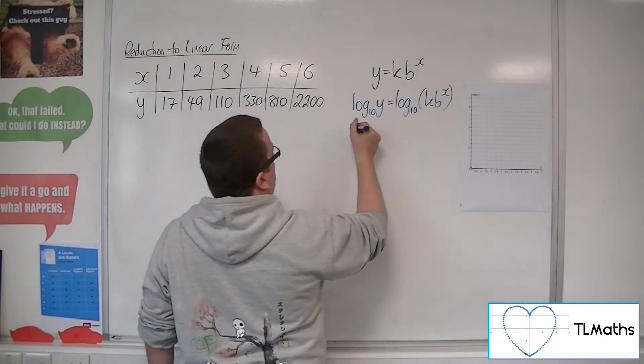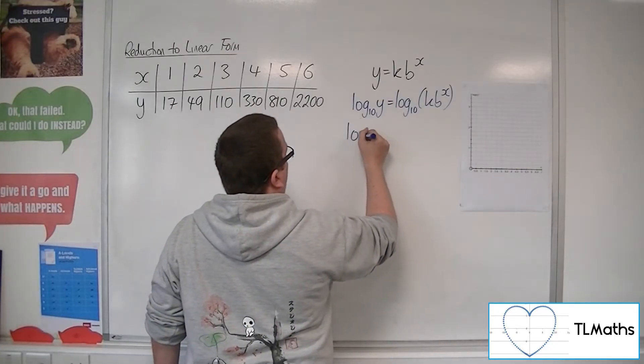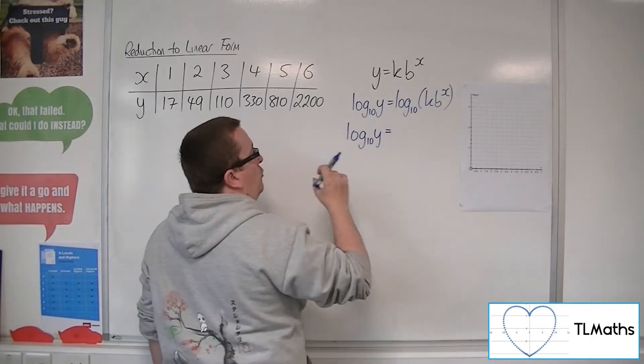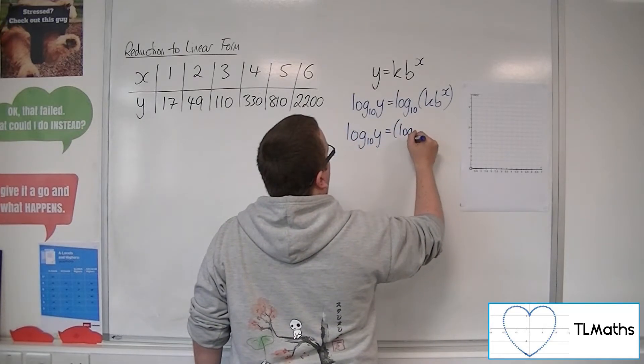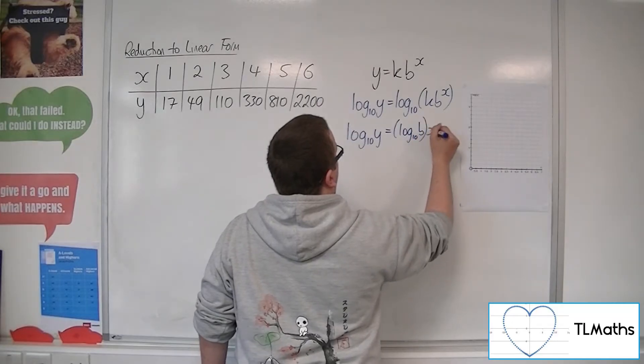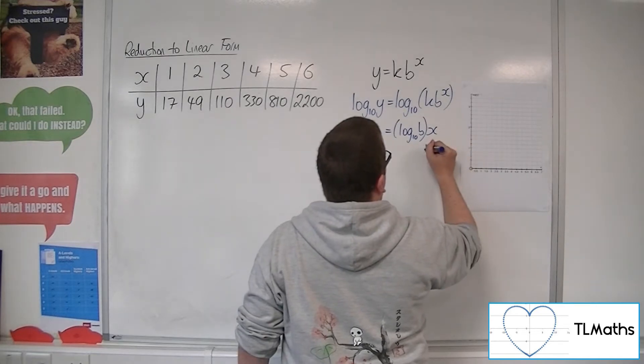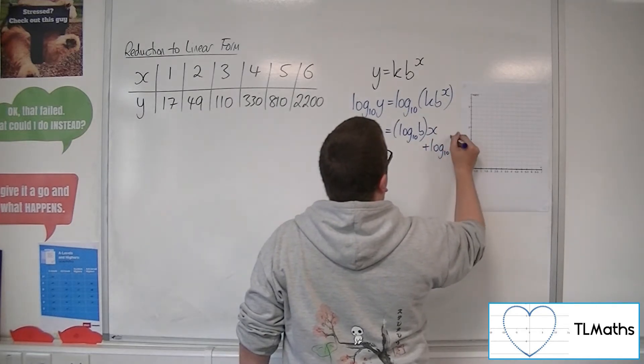The x can come down to the front, so I could write this as log 10y in that form of log 10b, x plus, if I've got room, log 10k.